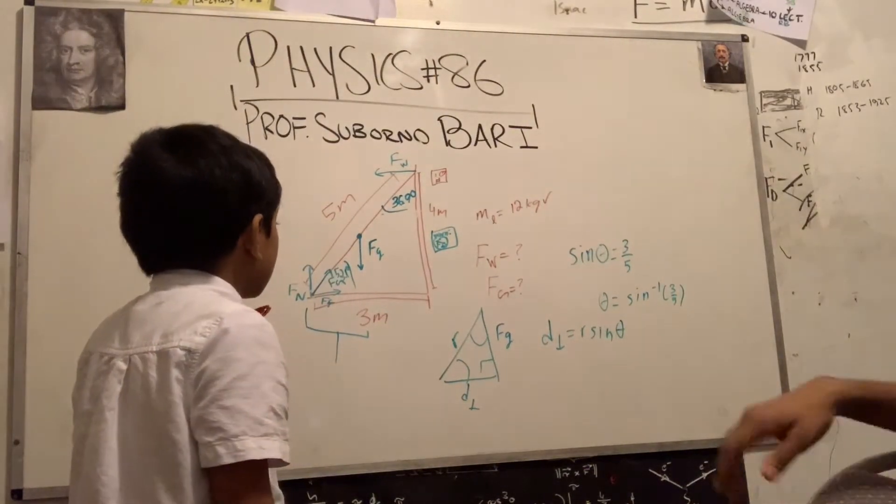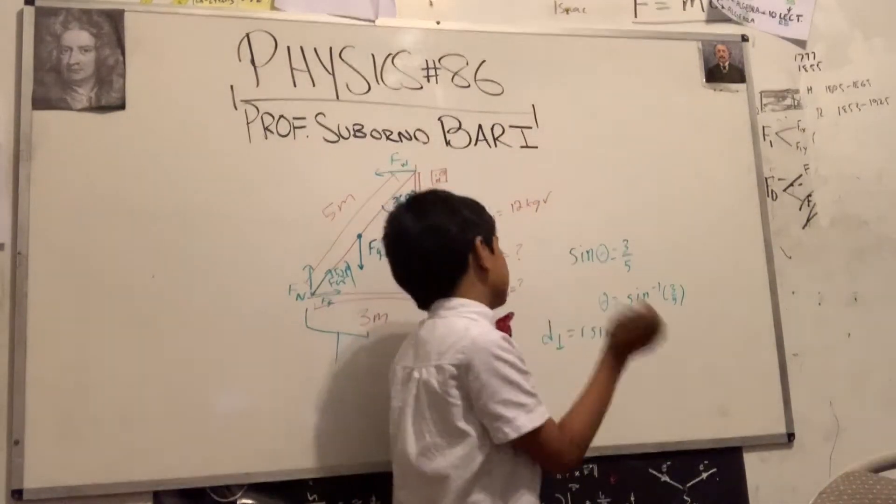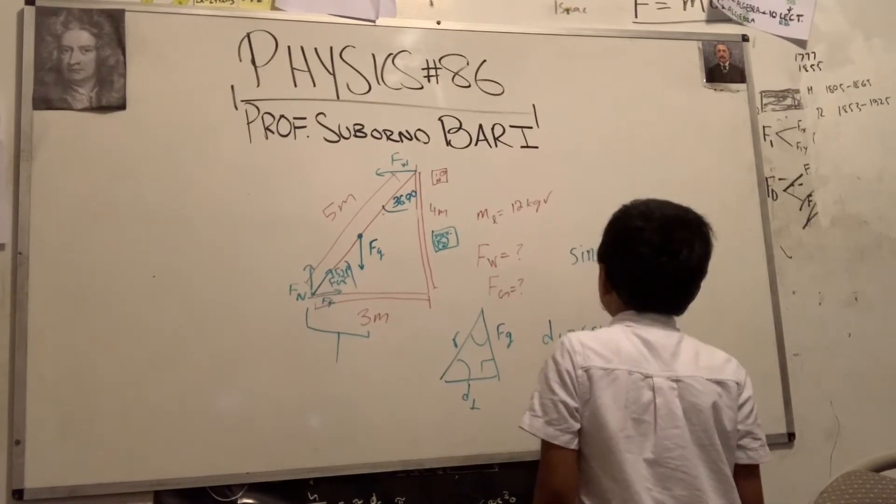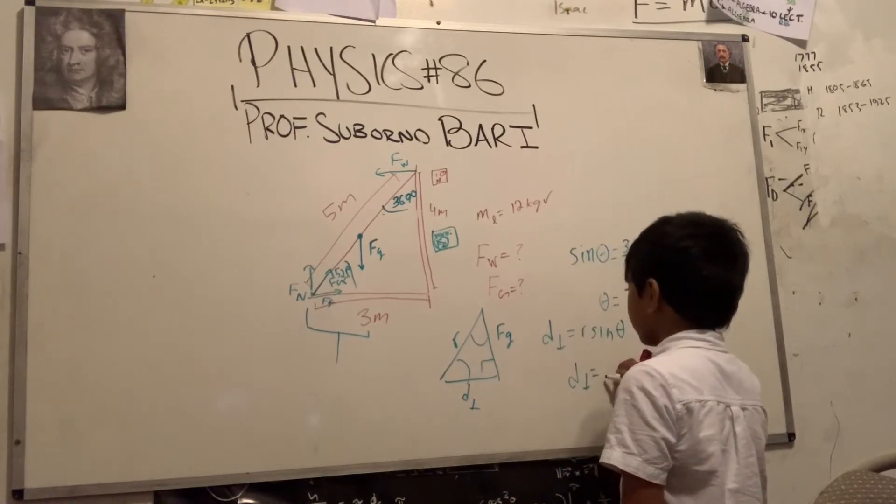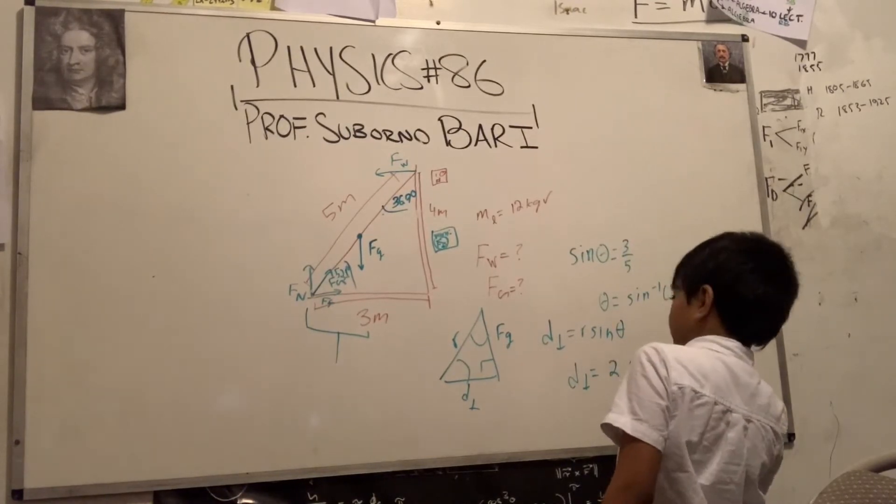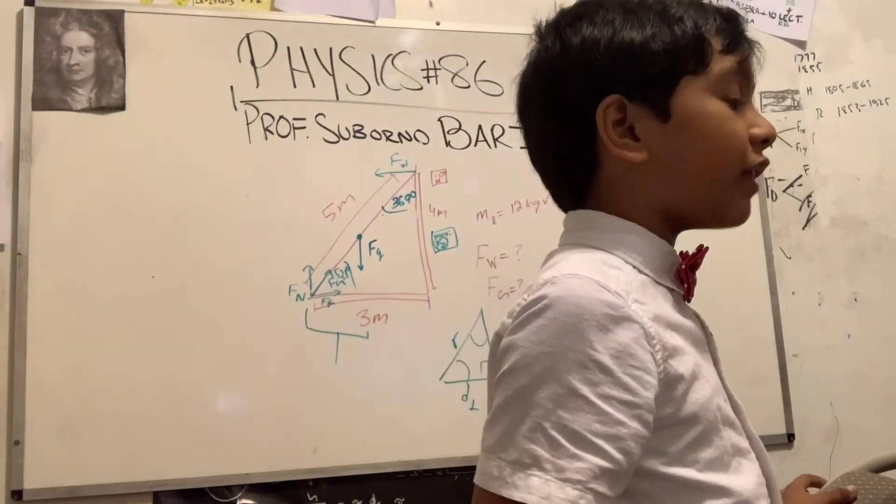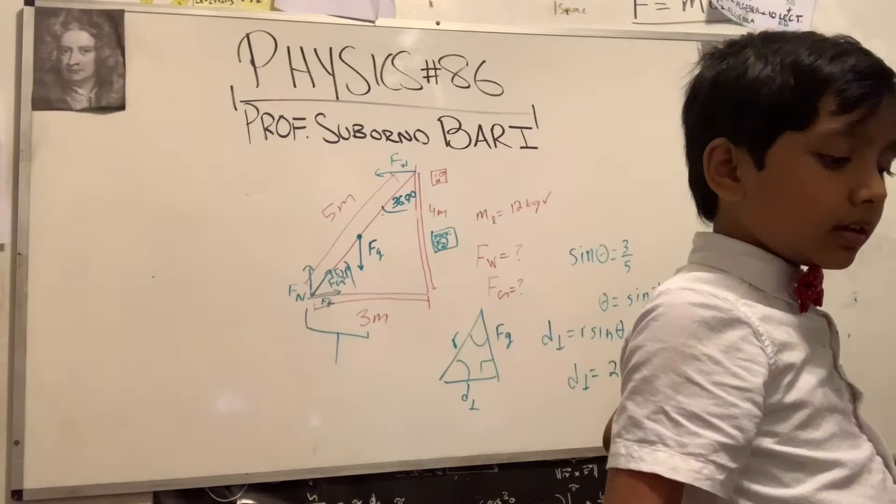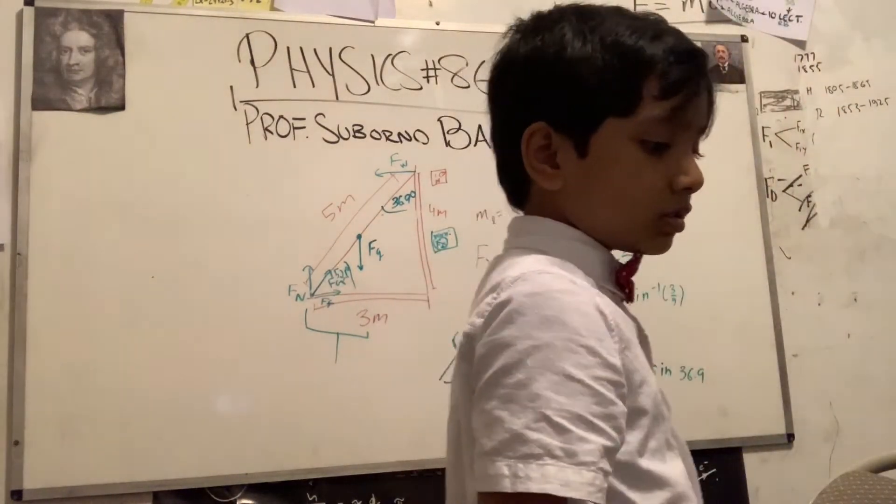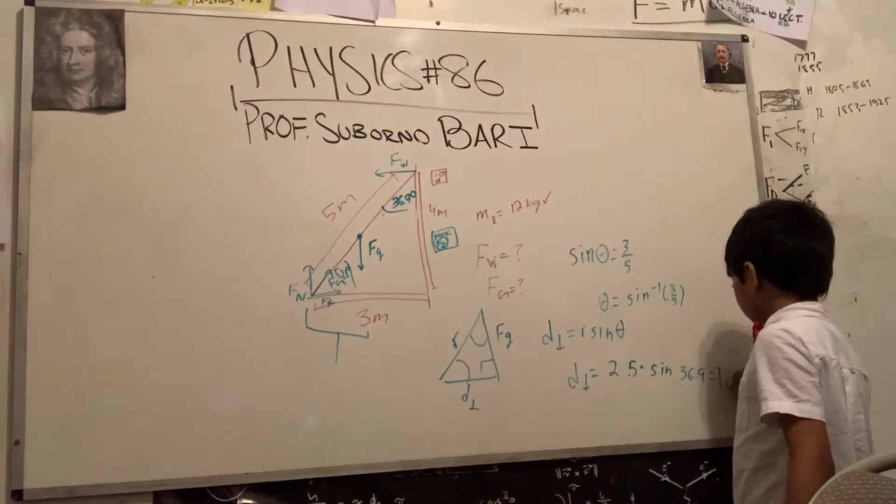So why are you decomposing FG? I'm not really decomposing FG. I'm just finding the angles one by one. D perp is equal to r sin theta. R should be 2.5, times sine 36.9. What is sine of 36.9 times 2.5? It's 0.6 times 2.5, which equals 1.5. Great.